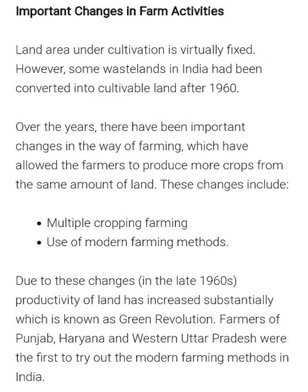Land, labor, and capital — I have to explain these three things. Land is where you set up a factory or carry out any activity. Land includes all the free gifts of nature, like soil, air, water, forest, and minerals, etc.